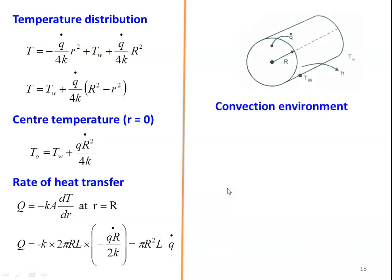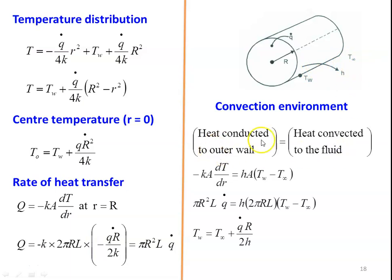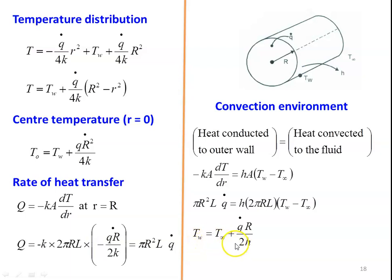Now we consider the convection environment. A cylinder with surface exposed to convective conditions has heat transfer coefficient H and fluid temperature T∞. Heat conducted to the outer wall equals heat convected to the fluid: −KA·(dT/dR) = H·A·(T_W − T∞). From this, the wall temperature is T_W = T∞ + Q̇R/(2H). The center temperature, wall temperature, and heat transfer rate are the three important equations to solve problems.